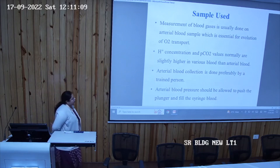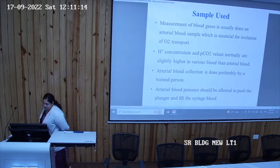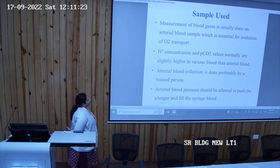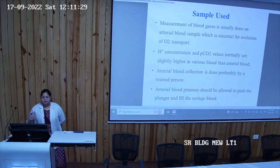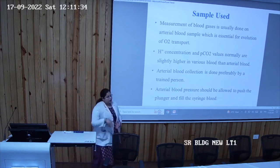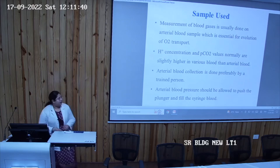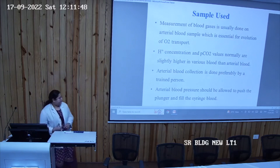Hydrogen ion concentration and carbon dioxide are basically higher in venous blood than in arterial blood. That is why, for the estimation of hydrogen ion concentration and partial pressure of oxygen and carbon dioxide, we prefer arterial blood. Only a trained person can take the arterial blood sample because identifying and accessing the artery is very tricky. When the syringe is inserted into the artery, arterial pressure will push the blood into it.